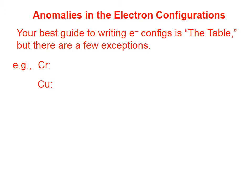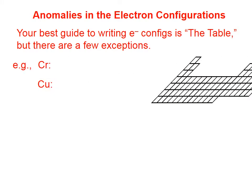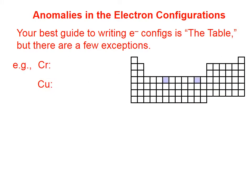Your best guide to writing electron configurations is the periodic table, but there are a few exceptions, such as chromium and copper. If you use the pattern from the periodic table, the electron configuration for chromium, you would expect it to end with 4s2, 3d4.